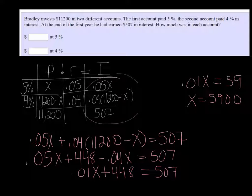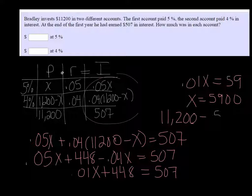So he put 5,900 into one account, and then the other one would be 11,200 minus 5,900, which is equal to 5,300.